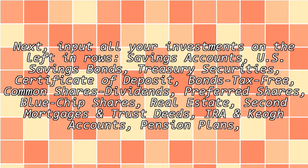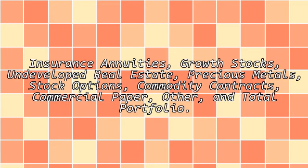List all your investments in rows on the left: savings accounts, U.S. savings bonds, treasury securities, certificate of deposit, tax-free bonds, common shares, dividends, preferred shares, blue-chip shares, real estate, second mortgages, percent trust deeds, IRA and percent PO accounts, pension plans, insurance annuities, growth stocks, undeveloped real estate, precious metals, stock options, commodity contracts, commercial paper, other, and total portfolio.